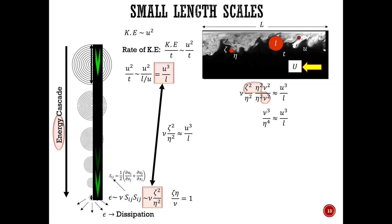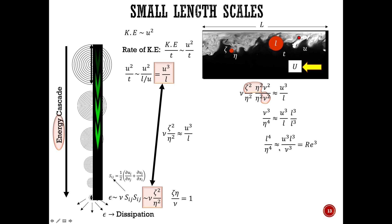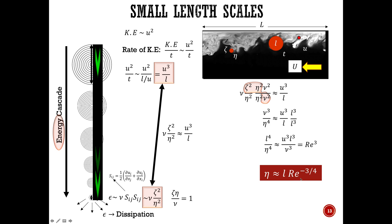Dividing and multiplying the right-hand side by L cubed and rearranging, L to the fourth comes to the left and nu cubed comes down. The quantity U times L over nu is the Reynolds number cubed — specifically the turbulent Reynolds number, where U is the fluctuating velocity and L is the largest eddy length scale. So rearranging all this, you get an expression: eta over L is proportional to L times Reynolds number to the minus three-quarters power.